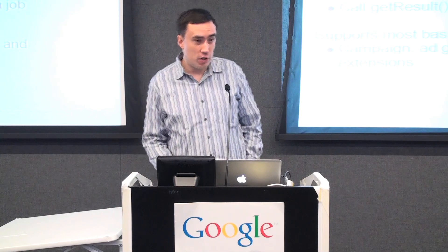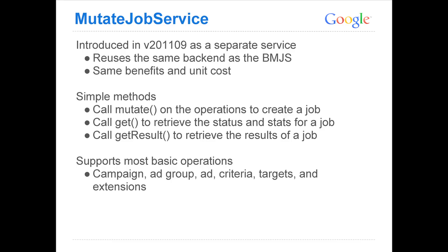So with v21109, we've launched this new Mutate job service. It reuses the same exact backend on our side as the BMJS, so it has a lot of the same behaviors and a lot of the same benefits. But we've simplified the interface — the API — so you now just have three methods that do everything. And it supports the same operations that the bulk Mutate job service did: campaigns, ad groups, criteria, targets, and extensions.